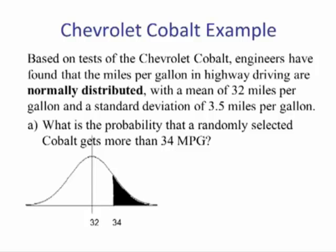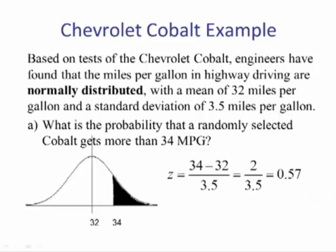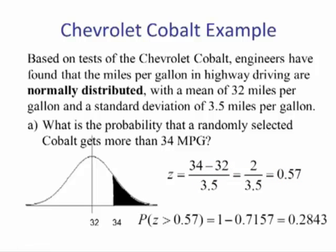First we draw our picture. Our mean is 32. We're interested in the probability of getting more than 34, so this is area to the right. We need to change 34 to a z-score: take our value minus the mean and divide by the standard deviation, and we end up with 0.57. Using table 5, we look up 0.57 and get 0.7157. We do 1 minus 0.7157 because we want area to the right, giving us 0.2843.